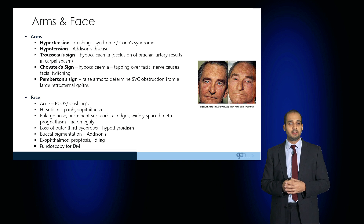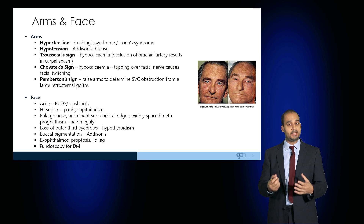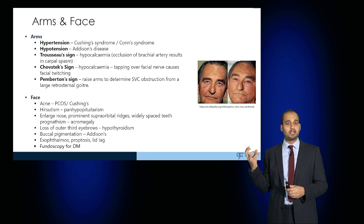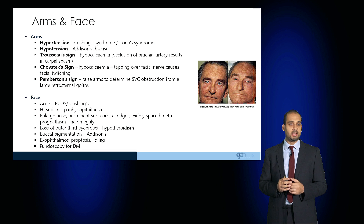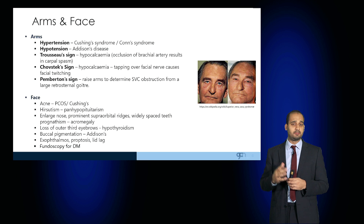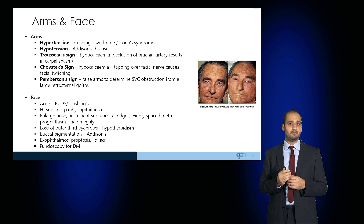Trousseau's sign is where occlusion of the brachial artery results in carpal spasm. Inflating a blood pressure cuff or applying a tourniquet may cause carpal spasm, and this would be as a result of hypocalcemia. Another sign of hypocalcemia is tapping over the facial nerve, particularly where the facial nerve divides in the parotid gland into five major branches. This is known as Chvostek's sign — twitching as a result of tapping over the facial nerve can indicate hypocalcemia.